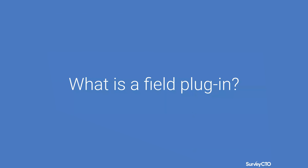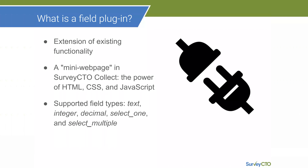The first question we'll ask ourselves is: what is a field plugin? A field plugin is an extension of existing functionality. When you use SurveyCTO, we have a number of fields that you use as you develop your forms. What a field plugin does is extend the functionality of those particular fields. It does this by giving the field an appearance — or mini web page — so it works like a mini web page within SurveyCTO Collect. Because it's working as a mini web page, we can take advantage of web-related resources such as HTML, CSS, and JavaScript. The fields currently supported for field plugins are text, integer, decimal, select one, and select multiple.